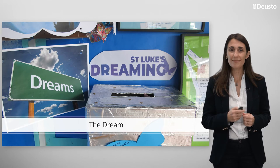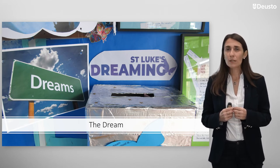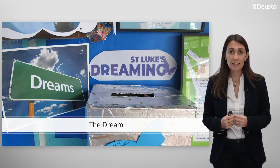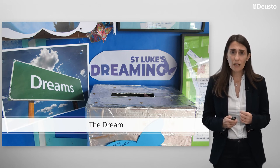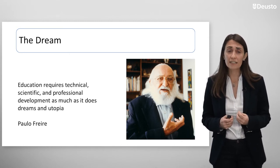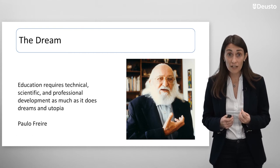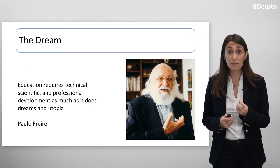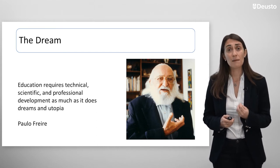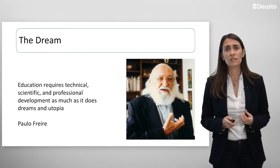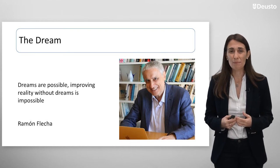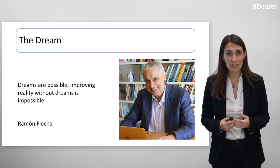The next step is the dream phase, which is an absolutely essential phase for transformation. We know that any important change in society started with a dream. The most well-known theorist in 20th century educational theory and pedagogy, Paulo Freire, said that education requires technical, scientific, and professional development as much as it does dreams and utopia. With the inspiration and contributions that Freire made to education informing learning communities, Ramon Flecha told us in 2006 that dreams are possible, and that improving reality without dreams is impossible.